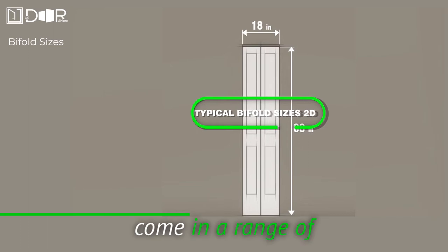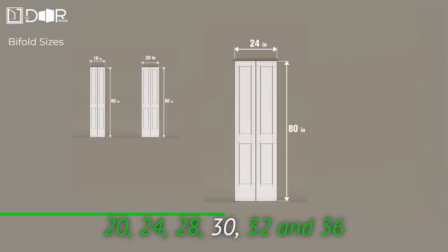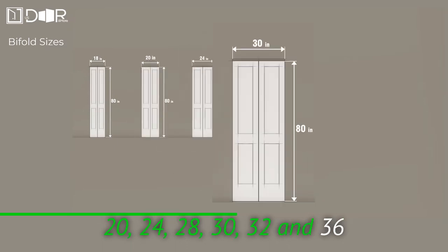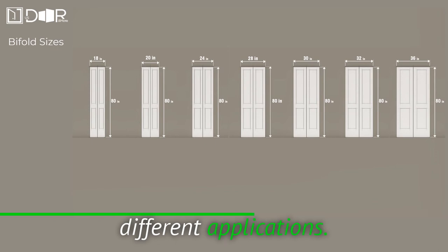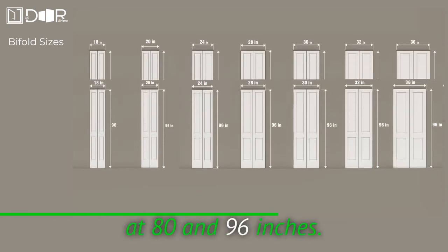Standard bifold doors come in a range of sizes. Common widths include 18, 20, 24, 28, 30, 32, and 36 inches, offering plenty of variety to suit different applications. The typical heights stand at 80 and 96 inches.